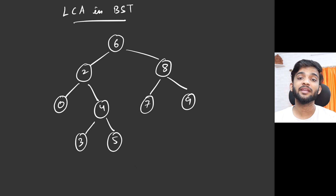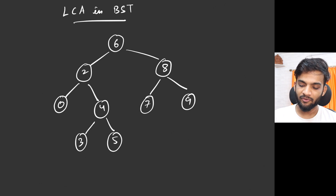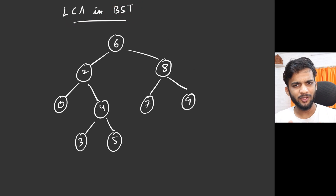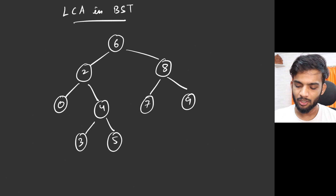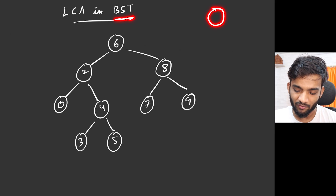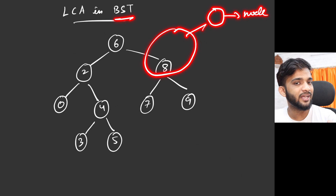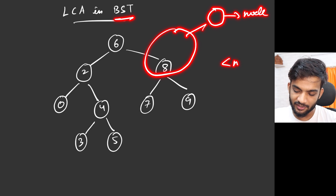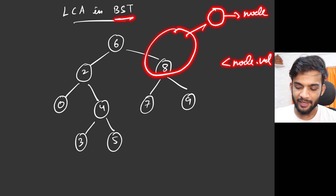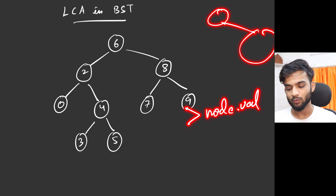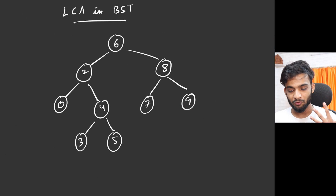Hey everyone, welcome back to the channel! Today we will be solving the problem: find the LCA in a binary search tree. A binary search tree is a tree where you have a node and everything on the left of that node is smaller than the node's value, and everything to the right is greater than the node's value — greater than, not greater than or equal to.